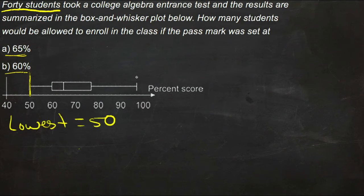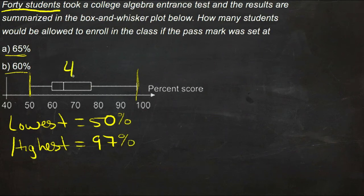The highest extreme, which is the highest number, looks like 92, 94, 96, 97... the highest was 97%. So between a 50% score and a 97% score, there were a total of 40 students.